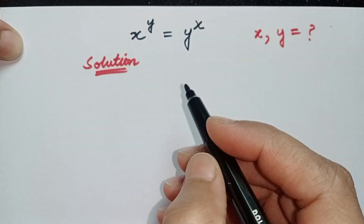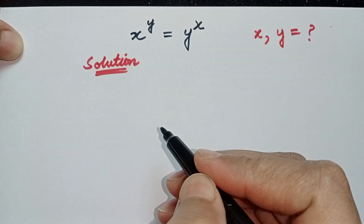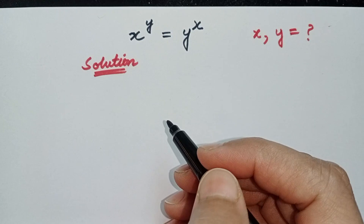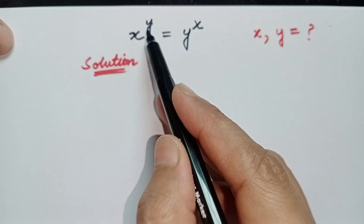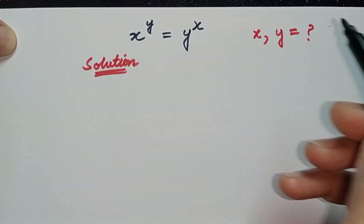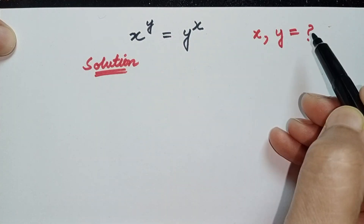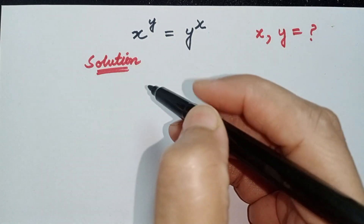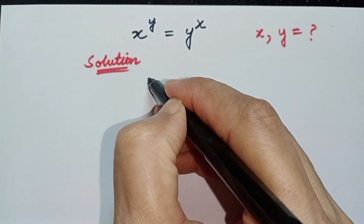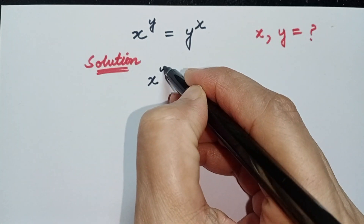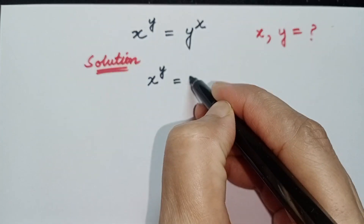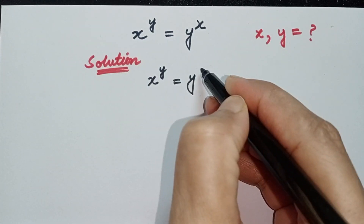Hi, welcome to Brain Equation. Today's question is: x to the power y is equal to y to the power x, where x and y are unknown. Let's begin. x to the power y is equal to y to the power x.